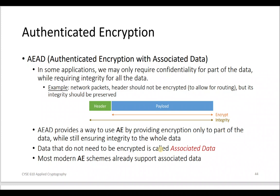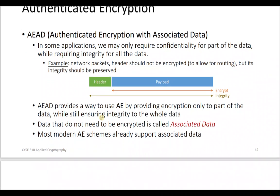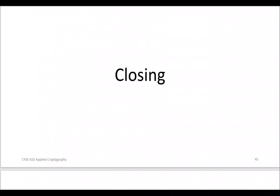AEAD stands for Authenticated Encryption with Associated Data. As mentioned, the associated data is the header, and the message payload is what gets encrypted. Integrity is preserved for all data — both the header and the payload. If a scheme supports associated data, it only encrypts the payload and leaves the header in plaintext, which allows for routing.